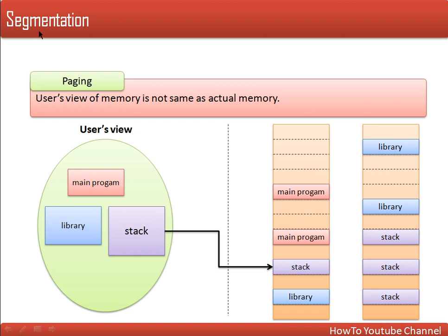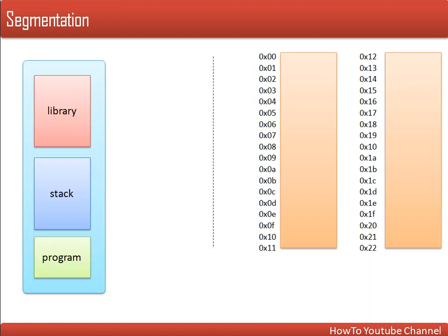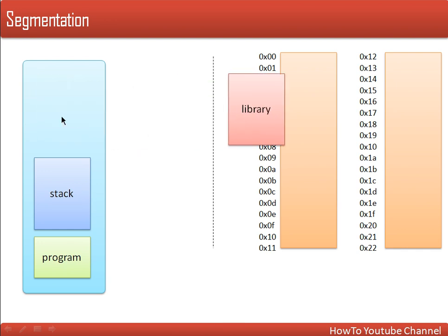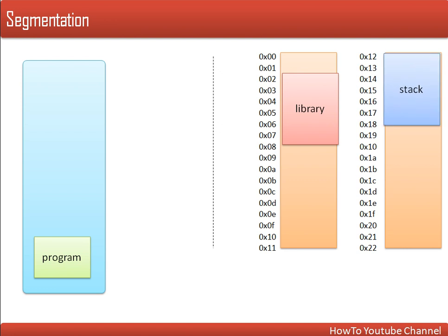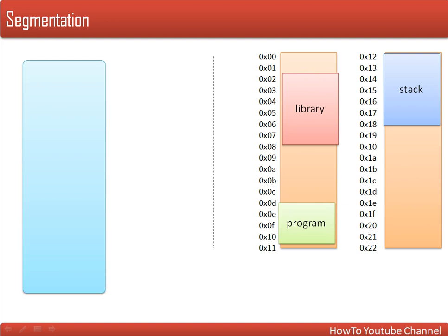Here comes the role of segmentation. Segmentation actually supports the user's view. Segmentation says that modules are loaded in memory at one place — the library is loaded here, the stack is loaded here altogether, and the program is loaded here. The user is not concerned with whether the program is loaded before the library or after the stack; the user just has the idea that the entire program is loaded in memory at one place altogether.